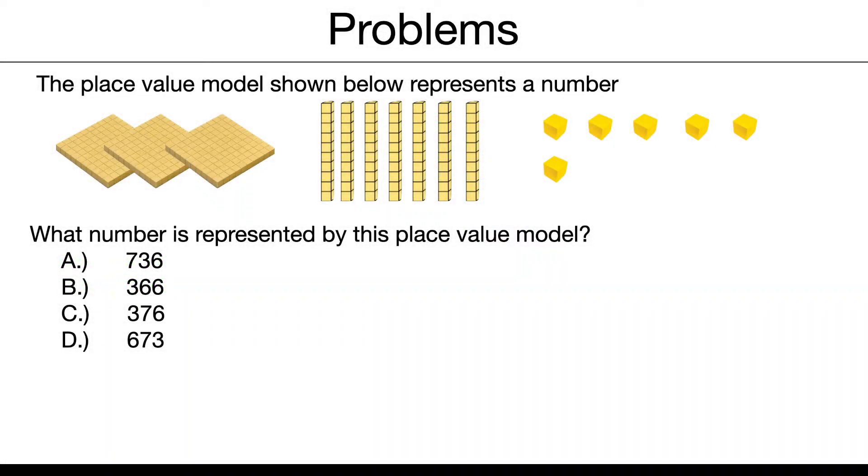Let's do some problems. The place value model shown below represents a number. What number is represented by this place value model? Well, we see 3 hundreds, 7 tens, and 6 ones. So we have our 3 separate place values in digits, right? If we put them together, we get the number 376.